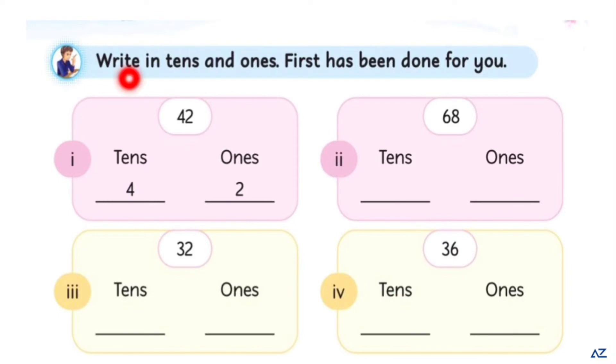Dear kids, write in tens and ones. First has been done for you. This is number 42 and this is tens and ones. We will write number 4 in tens and number 2 in ones.